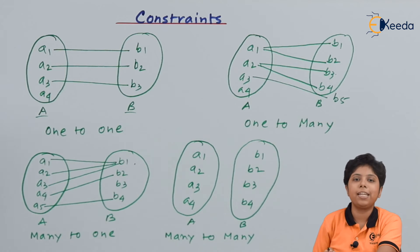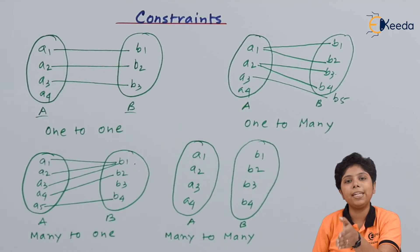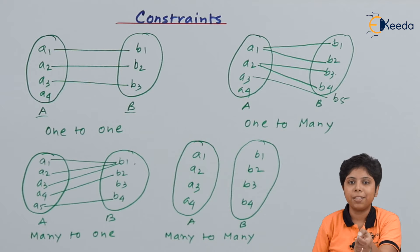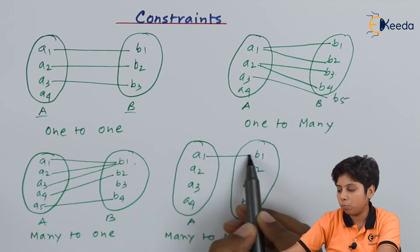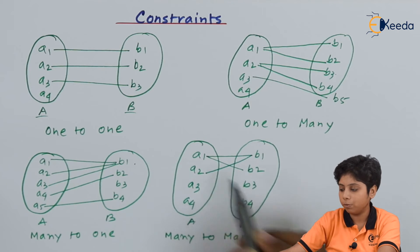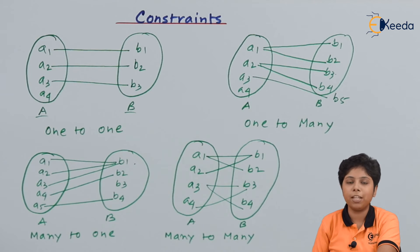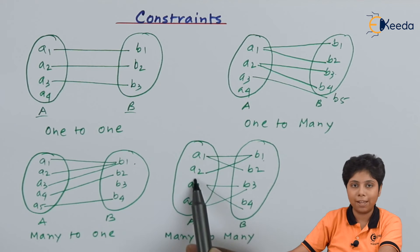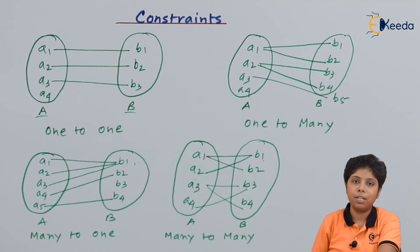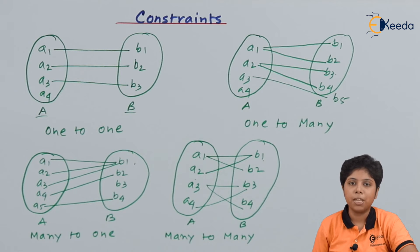Many-to-many mapping suggests that any number of attributes from the left entity set can be mapped to any number of attributes on the right entity set. For example, a1 can be mapped to b1 as well as b2, and b1 can also be mapped back to a1 and a2. Similarly a3 can be mapped to b4 and b3, and b3 can be mapped to a4. This bidirectional flexibility is what defines many-to-many mapping cardinality.